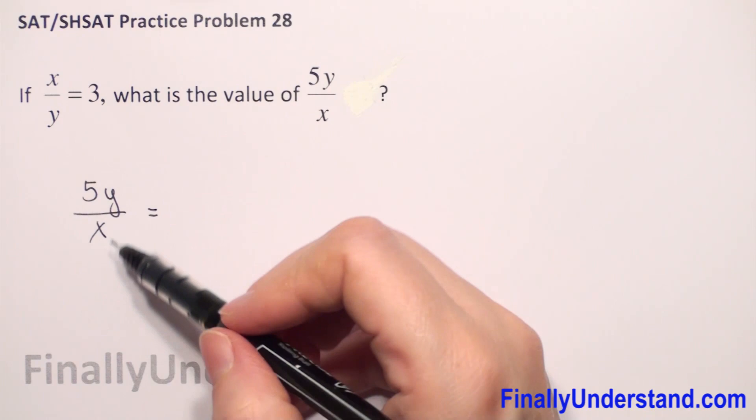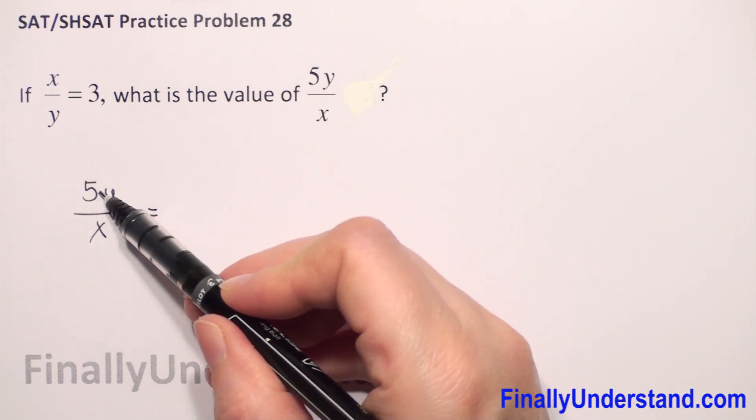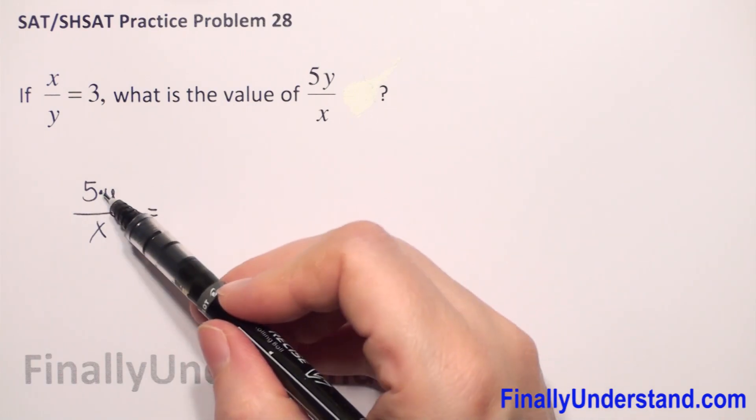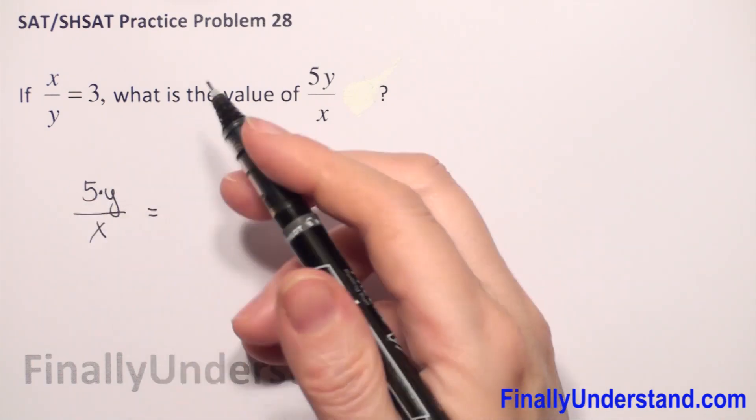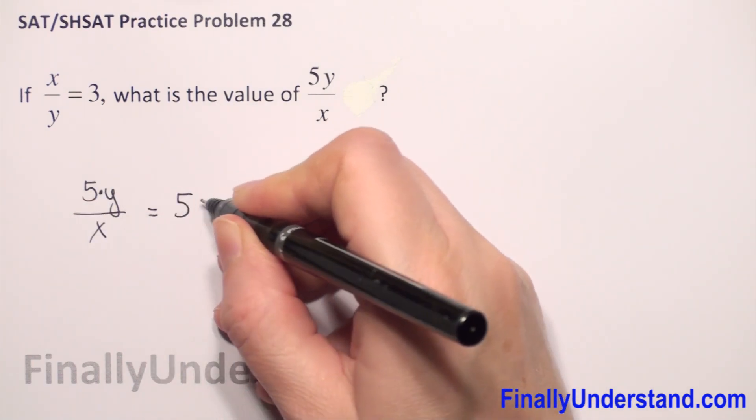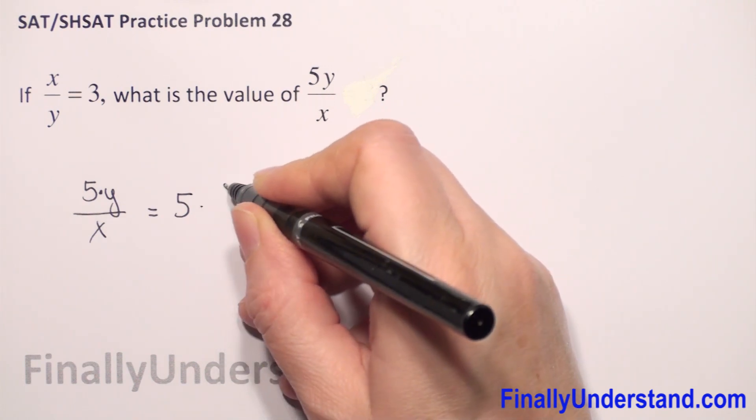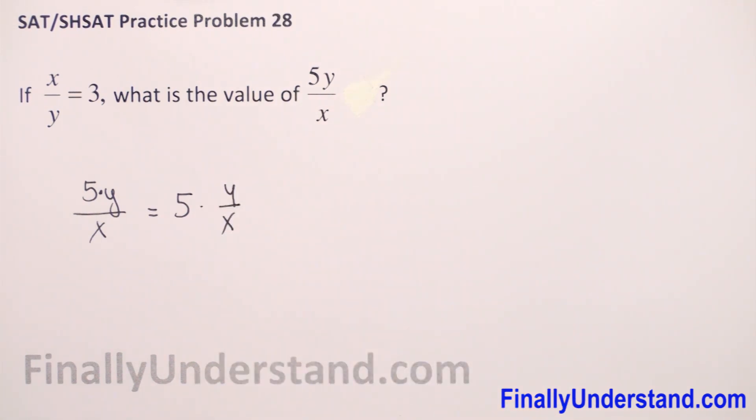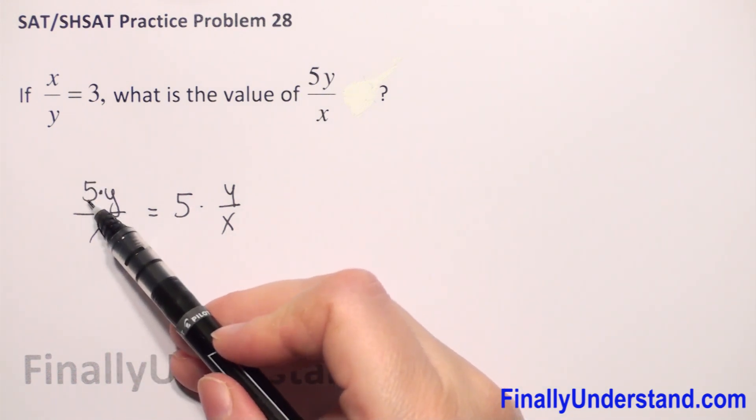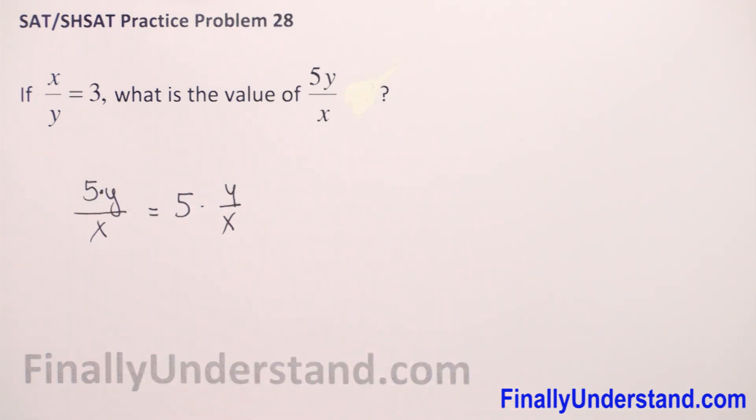How can we rewrite this? Because in the numerator we have multiplication, it's like 5 times y. So I can take this 5 before the whole fraction. So we have 5 times y over x. It doesn't change anything, I just take 5 from the numerator before our fraction. It's still the same.